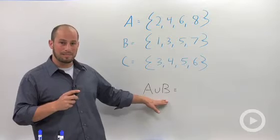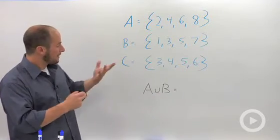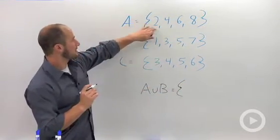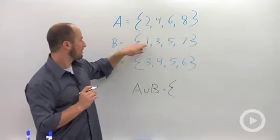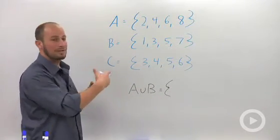So A union B is basically everything that is in A and everything that's in B. So looking at this, A brings 2, 4, 6, and 8. B brings 1, 3, 5, and 7. So what we actually end up with is every number 1 through 8.